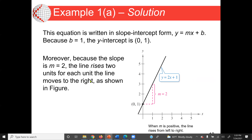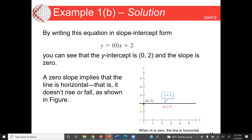Next, for y equal to 2, by writing this equation in slope-intercept form we can say y equal to 0x plus 2. The y-intercept is 2 and the slope is 0. A zero slope implies that the line is horizontal. For a horizontal line, the difference of y1 and y2 will be the same value, so the difference of the two y's will be zero, but the difference of the x's will be different — so we get a horizontal line.